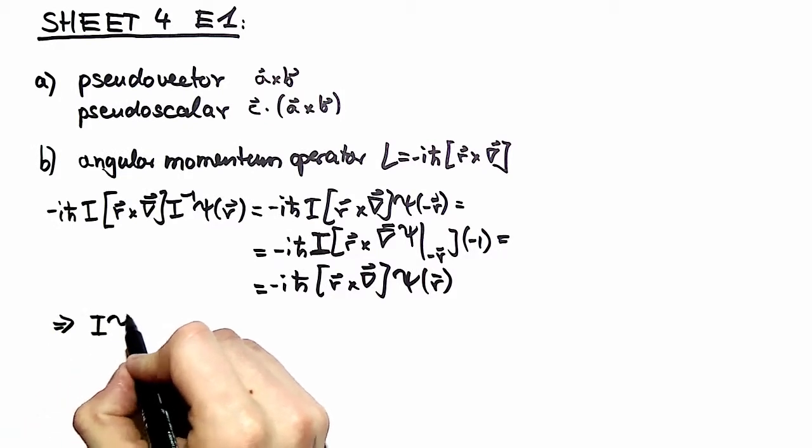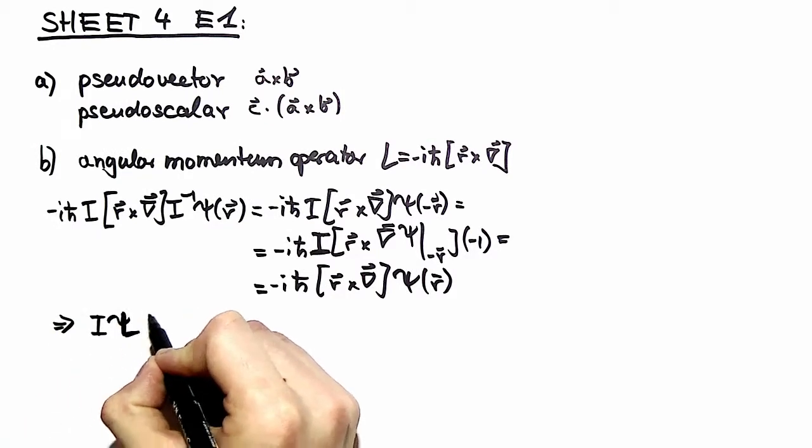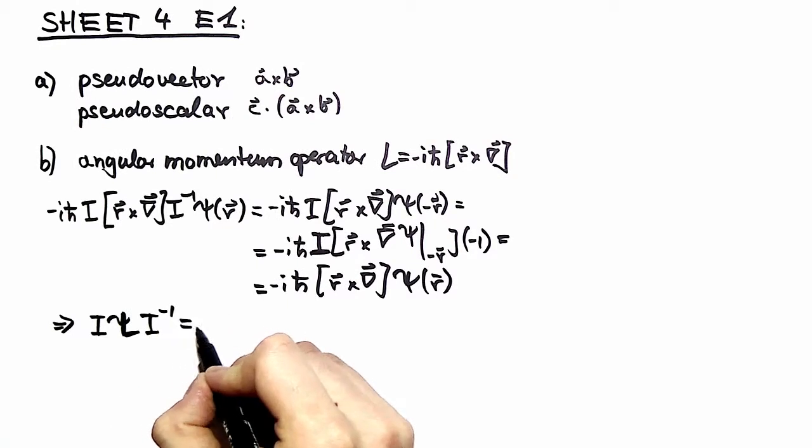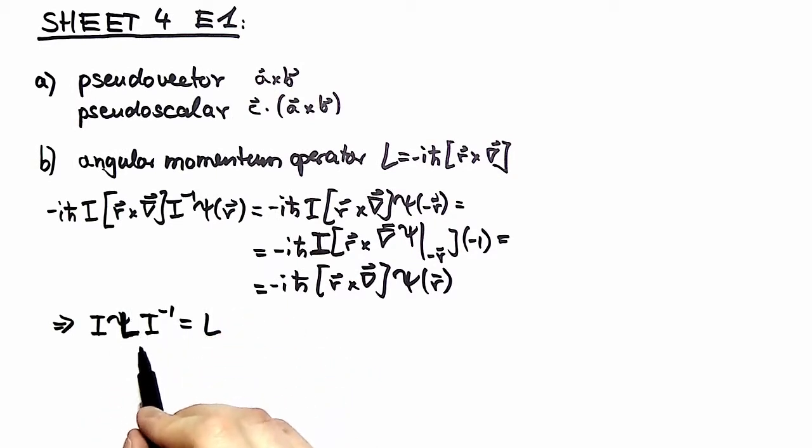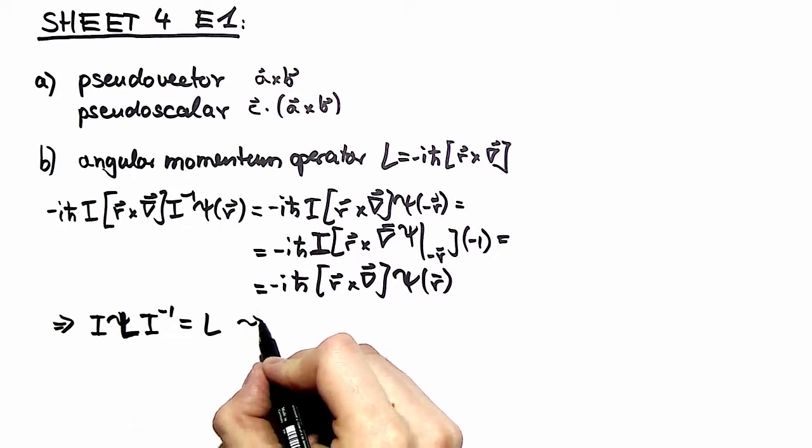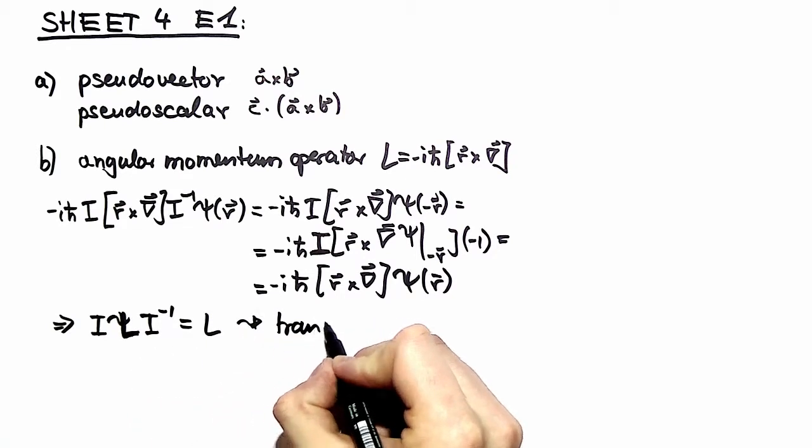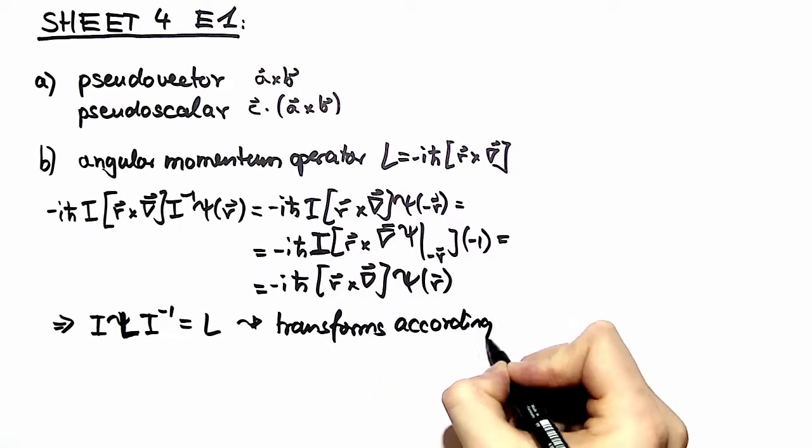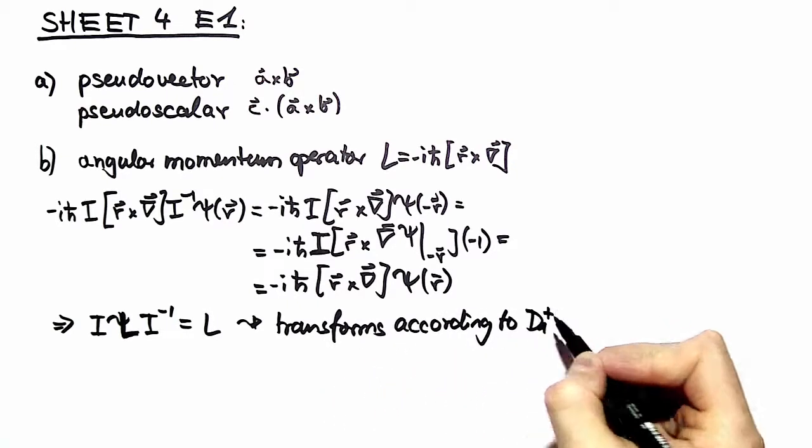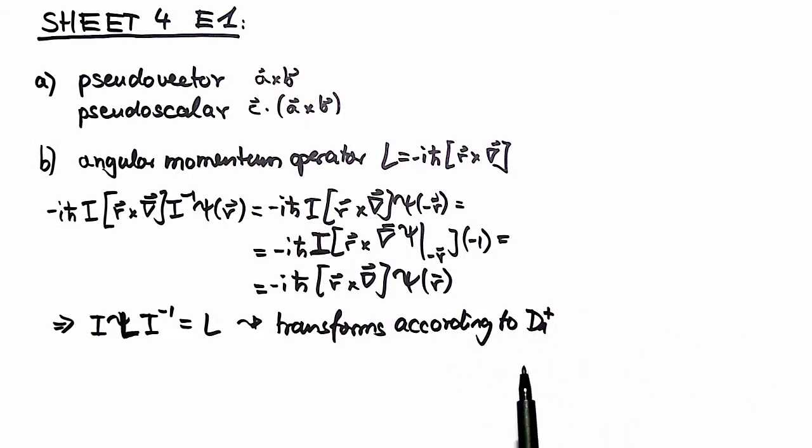You have shown that the angular momentum operator is indeed invariant under inversions. Therefore, you can conclude that it transforms indeed according to the irreducible representation D1 plus of O3.